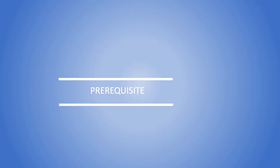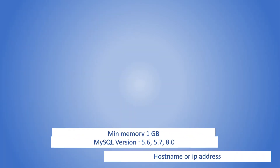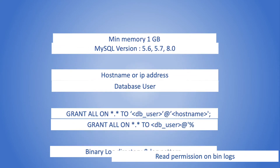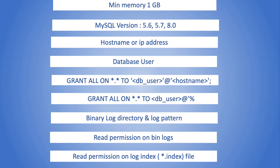Here are some of the prerequisites that we will have to keep in mind. Some of them are from the database side and the rest are from the CDC engine side. Minimum memory requirement is 1 GB. Database versions 5.6, 5.7, and 8 are supported. Database name and IP address or host name are some of the other requirements. The CDC engine will need a database user and password, and the user must be granted the privileges as mentioned. As mentioned earlier, the log bin directory and pattern must be added in the config file. CDC should have read access to the bin log files and the index file.